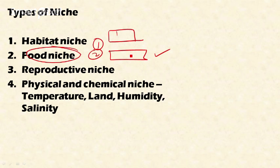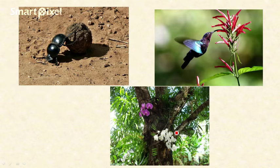Food niche is related to the food resources of a particular species. Physical and chemical niche includes abiotic factors like temperature, land, humidity, and salinity.